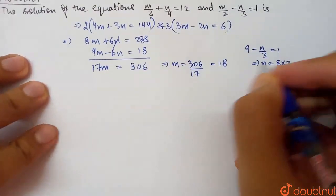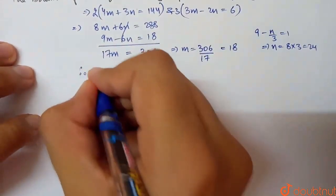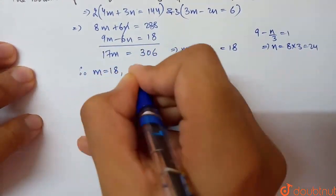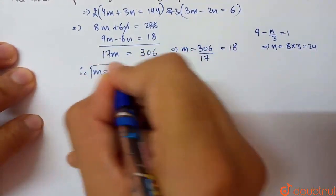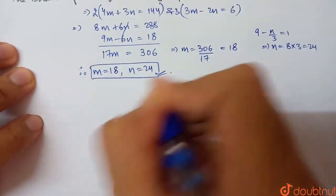So we have found both values. Therefore, our solution is m = 18 and n = 24. This is our required set of solutions.